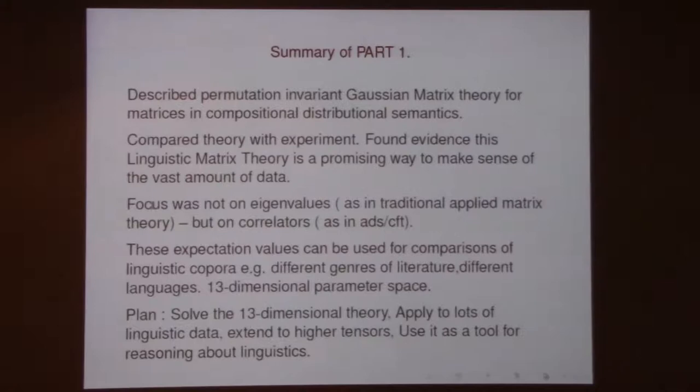With unitary symmetry you can diagonalize general matrices. Here we only have a discrete symmetry, so eigenvalues are not the obvious thing to think about. But as people who work on AdS/CFT, we like correlators — this is actually a natural thing to think about in this context, because they will reach a richer set of observables than eigenvalue distributions.